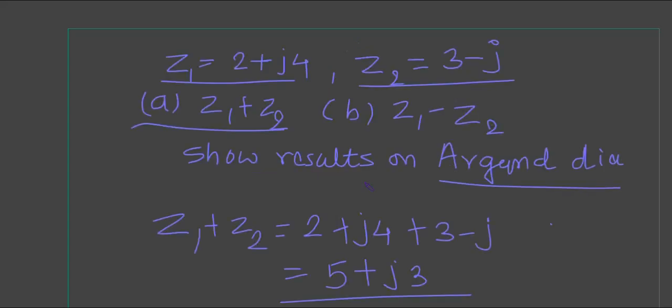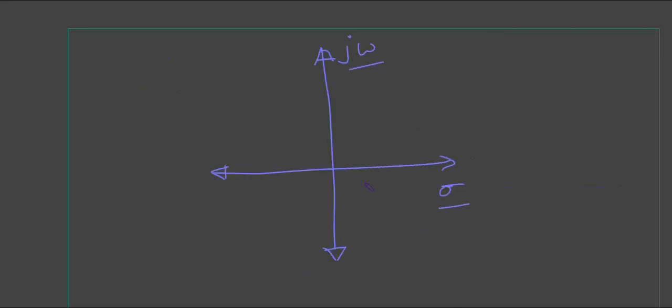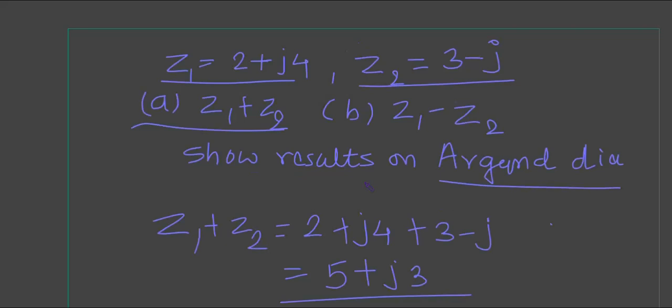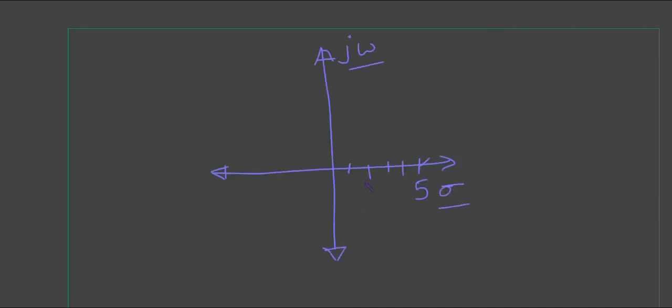Now your result is 5+j3. 5 is on the real axis, so here 1, 2, 3, 4, 5 - this is your point 5. The second part is j3. Plus j3 means it's upward, so 1, 2, 3 - this is j3. For 5+j3, you plot like this and this is your result.